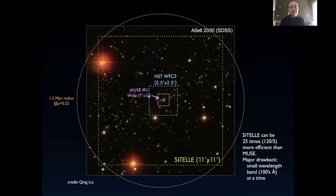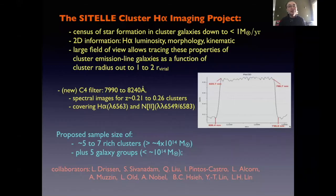The field of SITELLE is what makes it really special. Here on this plot, the largest field in 8-meter class telescopes is MUSE from VLT, with a field of 1 arc minute times 1 arc minute. And SITELLE's 11 arc minute field is probably on top of Sloan images of Abell 2390. So you can see how SITELLE can image most part of a rich cluster. A major drawback of SITELLE is that we have to use a relatively narrow band of observation at any one time, about a few hundred angstroms. So the SITELLE cluster H-alpha project aims to look at star formation in cluster galaxies down to about one solar mass per year formation rate to get 2D information on H-alpha: morphology, kinematics, and luminosity. And a large field of view allows one to trace these properties of emission-line galaxies out to as much as two virial radii.